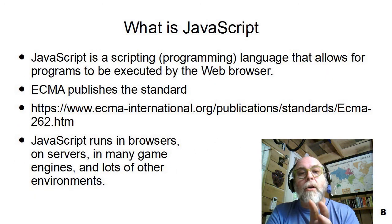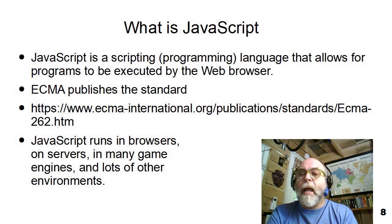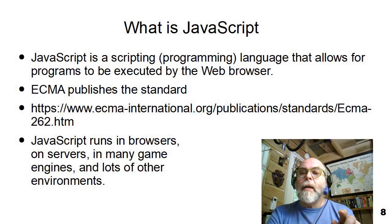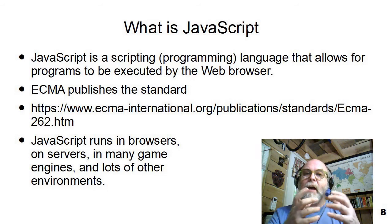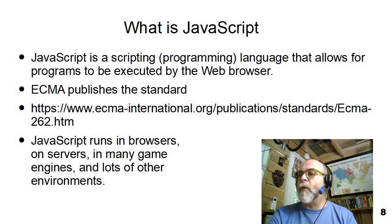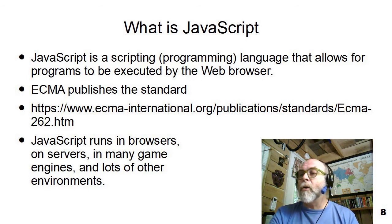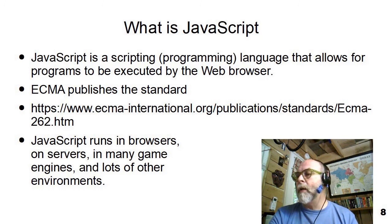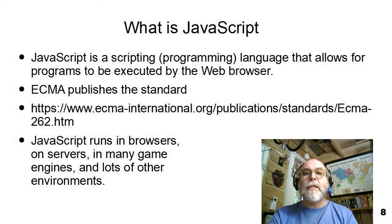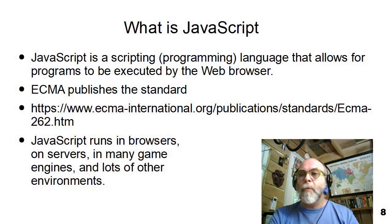The third part is JavaScript. JavaScript is a computer programming language that allows programs to be downloaded and run on your web browser. JavaScript can do animations and basic validation, making sure you type the right things in the right place. The standard for JavaScript is published by a group called the ECMA, or the European Computer Manufacturers Association — sometimes referred to as ECMAScript. JavaScript runs in browsers, on servers, on many game engines, and lots of other environments, but we'll just explore it a little as it's used in an HTML page in a browser towards the end of the course.